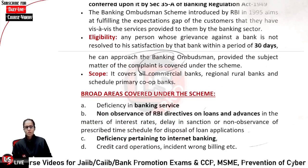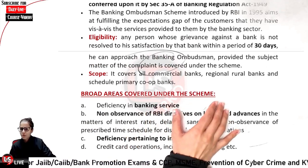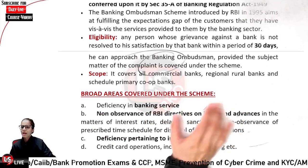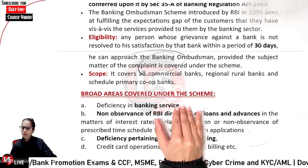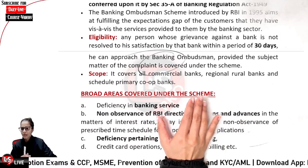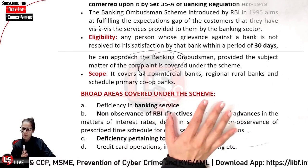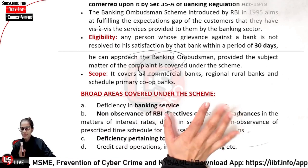Next is the scope. Commercial banks, regional rural banks, and scheduled primary cooperative banks are covered under the Banking Ombudsman Scheme.